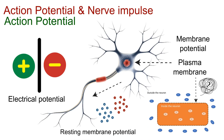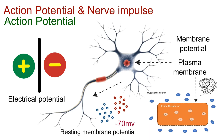And in most neurons, it measures around minus 70 millivolts. That's the quiet stage of the neuron, like a charged battery waiting to be switched on.